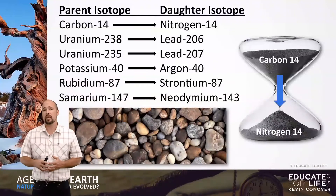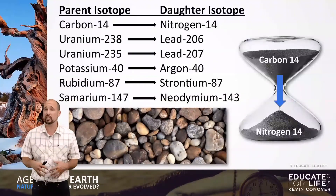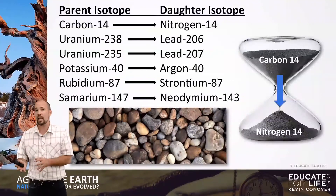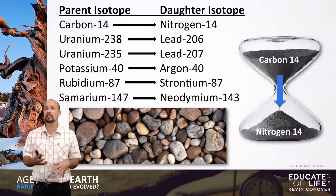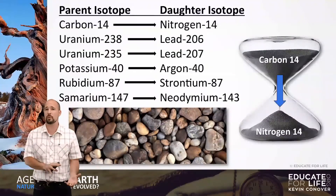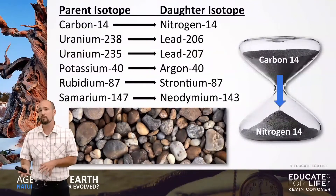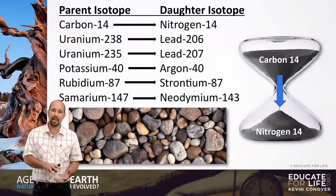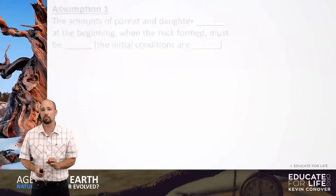They say if a rock has a whole bunch of a daughter isotope in it, and another rock has a lot less, then the rock with more daughter isotope is older than the rock with less daughter isotope. But what's our problem?